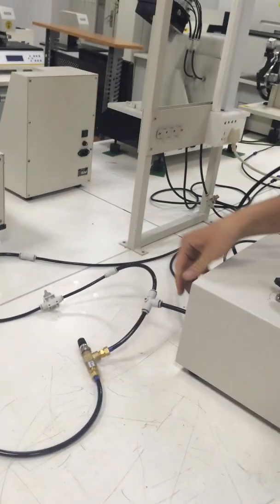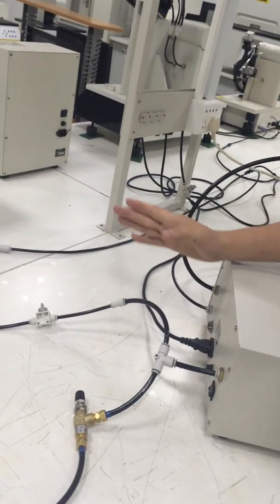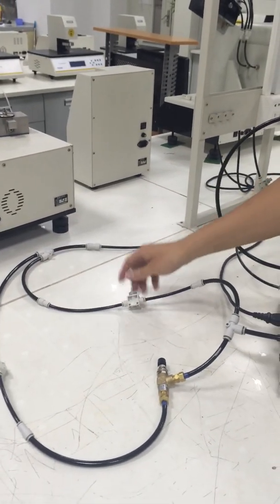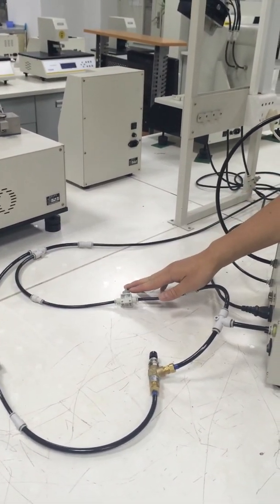You can see this is the gas inlet to the instrument. Now we divided it into two pipes. One is a normal pipe with only one stopper, used for burst test.